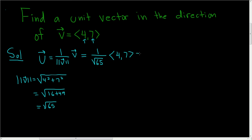And we can go ahead and multiply this number times this vector as follows. This is 4 over the square root of 65, 7 over the square root of 65. And that is the final answer.